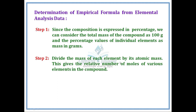We can consider the total mass of the compound divided by its atomic mass. This gives the relative number of moles of various elements in the compound. So, we divide the mass percentage by atomic mass to get the number of moles.